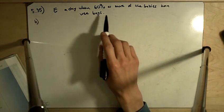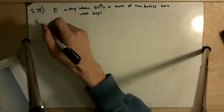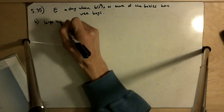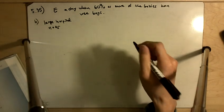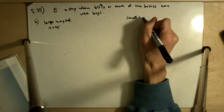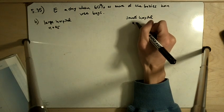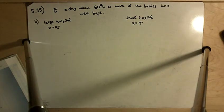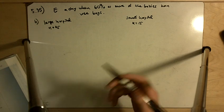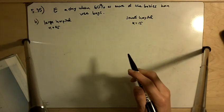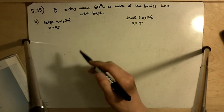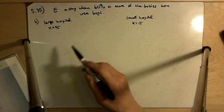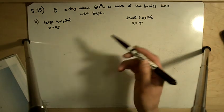Part E says a day when 60% or more of the babies born were boys. At the large hospital, we're dealing with samples of size N equals 45. About 45 babies were born over there, and at the small hospital, about 15 babies were born. Just from my intuition, and I guess because I've had statistics and probability, I can tell you that the smaller hospital is going to record more days, because with the larger hospital, we're expecting the sample proportions to be closer to the true population proportion, which is 0.5.